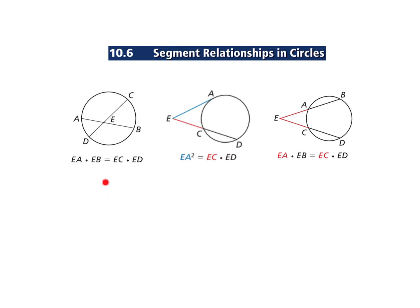In the first example, when you have the plus sign in the middle — the vertex on the inside — you take each segment of the bigger segment: ED and EC, multiply those together, and take AE and EB and multiply those together, and they should be equal.